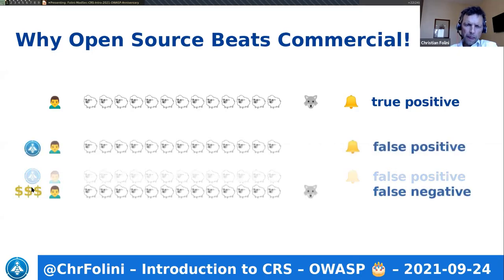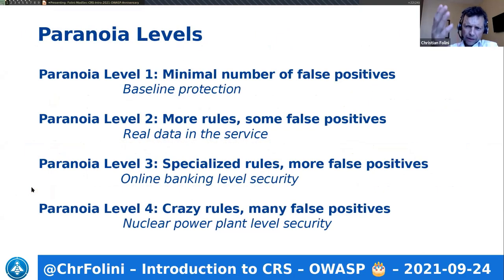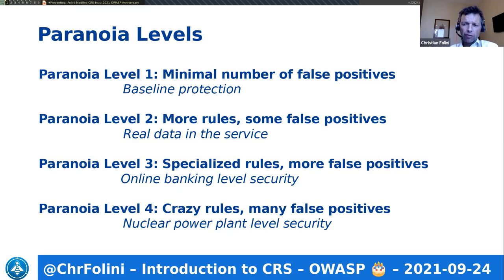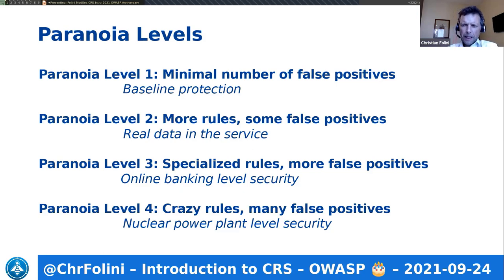So what is under the hood when you look at CRS? The default installation comes with paranoia level one, which brings a minimal number of false positives and a good baseline protection. We would say everybody hosting something on the internet should run CRS with paranoia level one. When you have real data and real money involved — a commercial web shop, users subscribing to a service, passwords, real assets — then you should go at least to paranoia level two. There you get additional rules that may err on the false positive side.